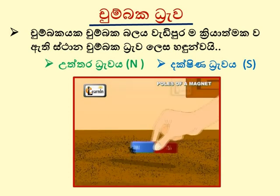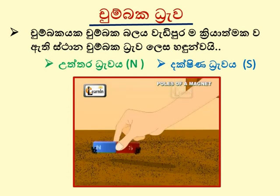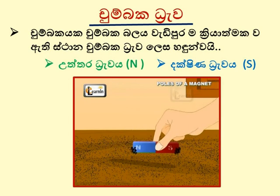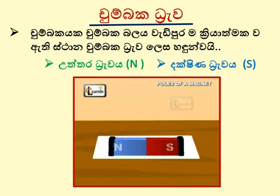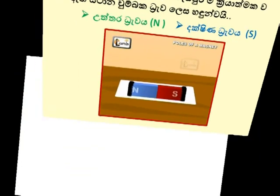These two ends of the magnet are called the poles of the magnet. They are the points of the magnet where all the iron particles get attracted.